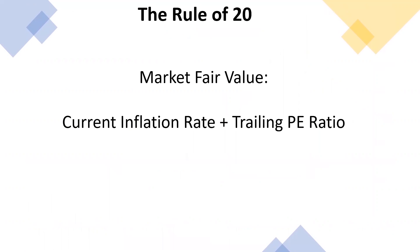There's another indicator used as a simple rule of thumb for coming up with a fair value for the S&P. That is taking the current inflation rate plus the trailing P/E ratio, which should equal approximately 20. So if you have the current inflation rate, you take 20 minus that, and that gives you where the trailing P/E ratio should be.